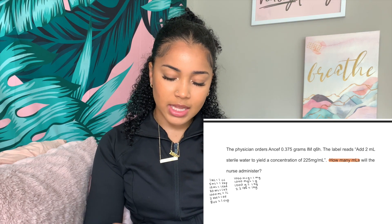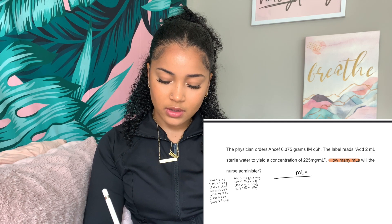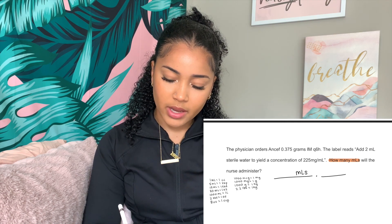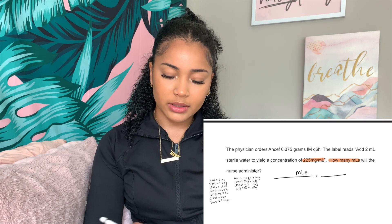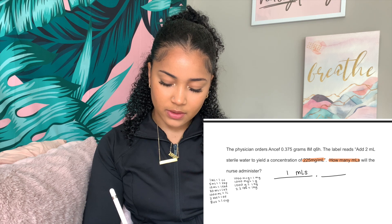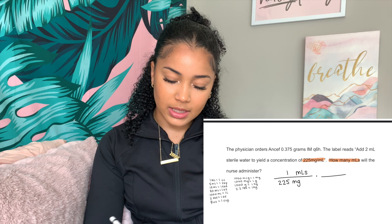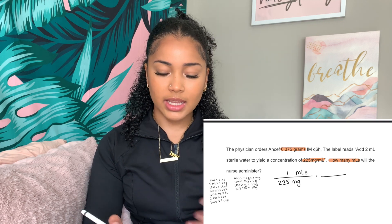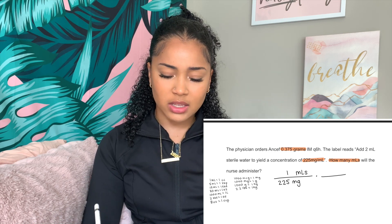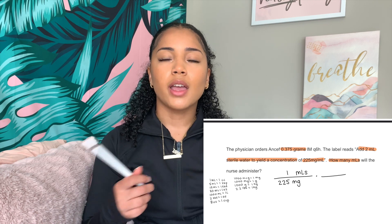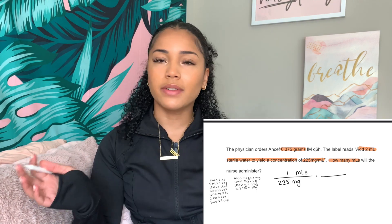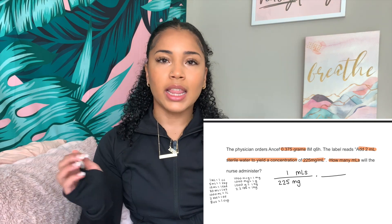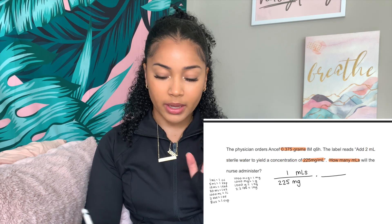Next question — instantly we're looking for milliliters. Available is 225 milligrams per milliliter, so one milliliter per 225 milligrams. The order is 0.375 grams. They try to trick you: the question mentions adding two milliliters of sterile water to reach that concentration. If I read the full question, I might add two to my answer and mess everything up — but that two milliliters gives you the concentration of 225 milligrams per milliliter. It's not part of your answer.